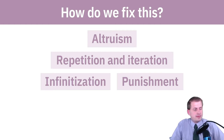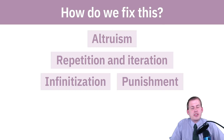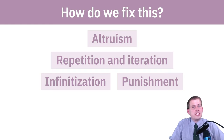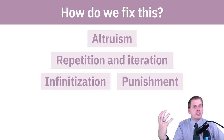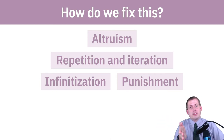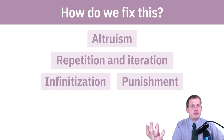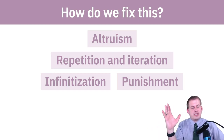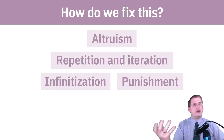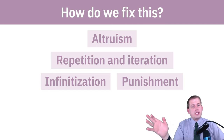If you can punish people for defecting, that changes the payoffs and they won't want to defect. We'll talk later in the semester about how societies have figured out different ways of punishing free riders. We'll read examples from Eleanor Ostrom, one of the only political scientists to win the Nobel Prize in Economics. Her research showed how fishing communities in Turkey avoided overfishing without specific laws or a ministry of fishing — they created informal institutions for monitoring and a punishment system to collectively solve these issues.